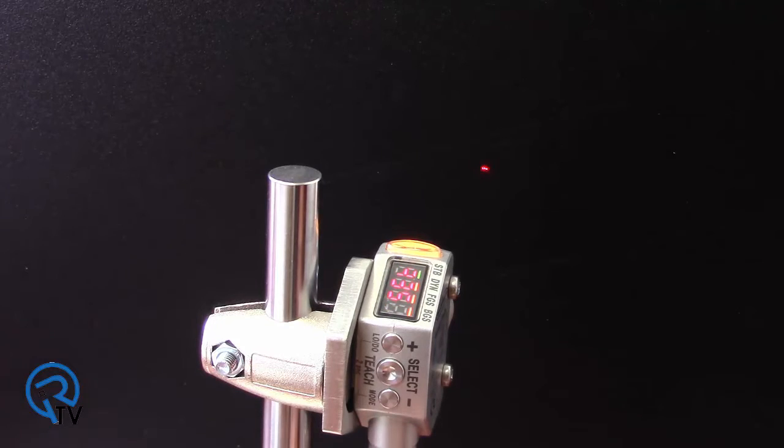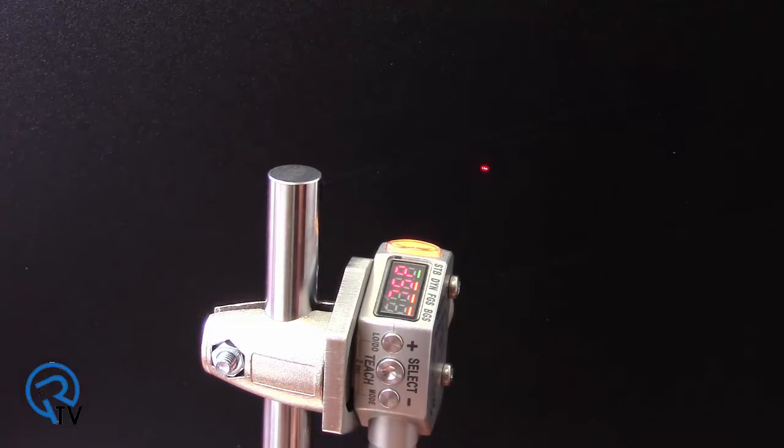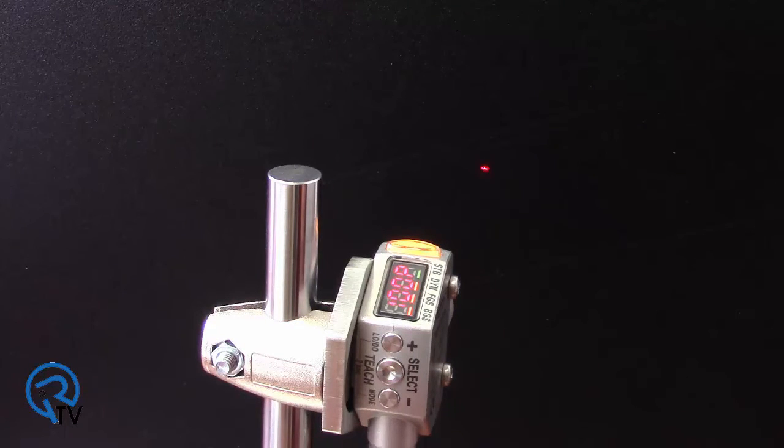Present a reference condition and push the Teach button again to teach the reference condition. The sensor learns this as a 100% match condition and will look for changes in distance, intensity, or second reflection condition.